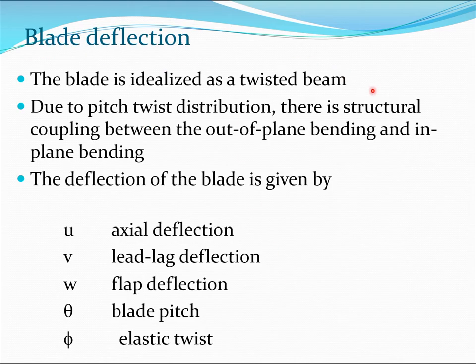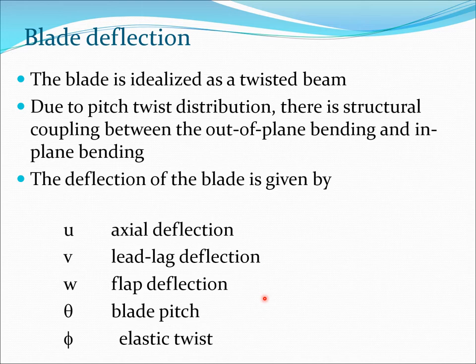The blade is considered to be a twisted beam, and due to the pitch-twist distribution there is structural coupling between the out-of-plane bending and in-plane bending. The flap motion is out-of-plane bending and the lag motion is in-plane bending. The deflection of the blade is given in terms of: axial deflection, lead-lag deflection, flap deflection, pitch, and elastic twist. Typically we use W for flap, V for lag, theta for blade pitch, and phi for torsion.